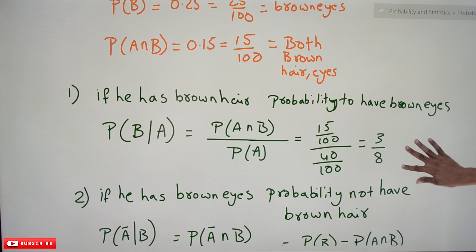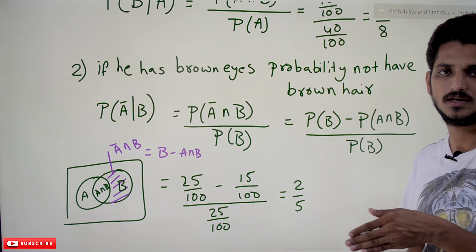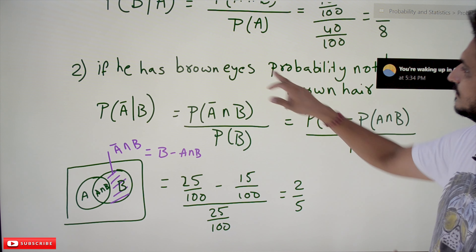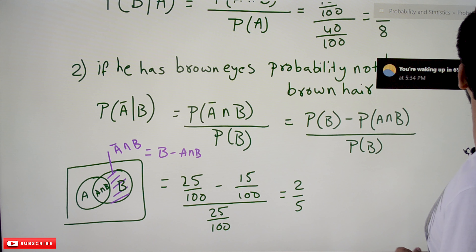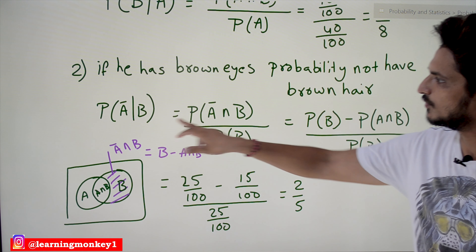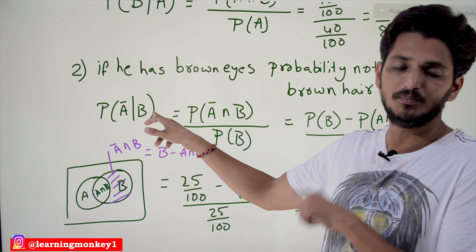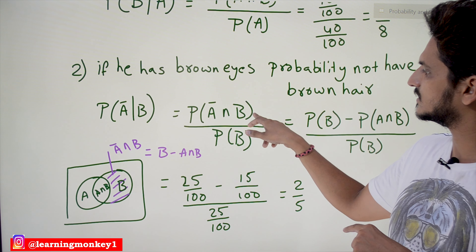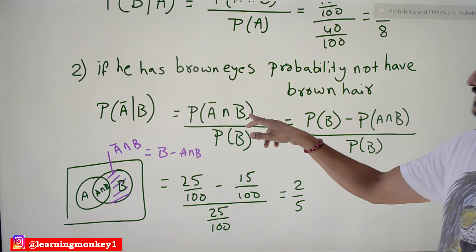Coming to the second question: if he has brown eyes, B is given. We need the probability of not having brown hair, i.e., P(A complement | B). This is given by P(A complement ∩ B) / P(B).